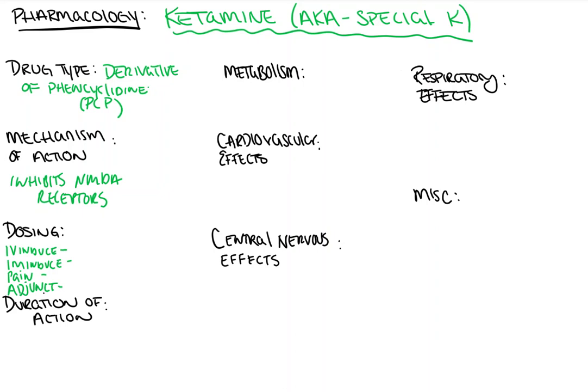Now dosing for ketamine varies greatly. You can see the labels there — IV induction, IM induction, pain, and adjunct. This is because depending on the route of administration and the purpose, the dose changes. IV induction has a different dose than IM induction, and those are different from the adjunct dose, which is then different from the pain dose.